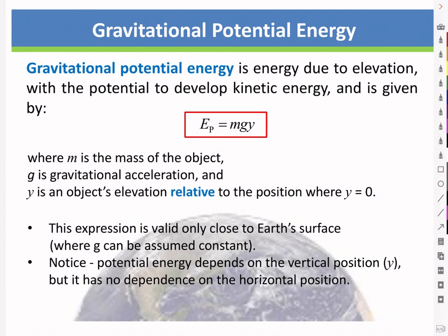Let's look at the concept of potential energy. Potential energy is just stored energy, or the potential for a force to do work on an object. Gravitational potential energy is energy due to an elevation relative to the Earth, because it's the potential for the gravitational force to do work on an object.